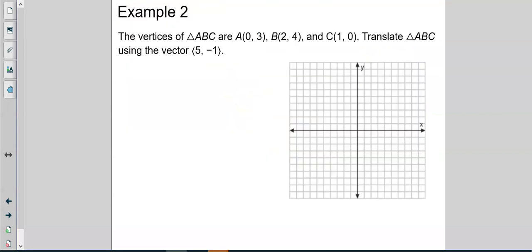The vertices of a triangle, A, B, C, are 0, 3. So 1, 2, 3. 2, 4. 1, 2. 1, 2, 3, 4. 1, 2, 3, 4. And 1, 0. So A, B, C. That's a horrible triangle, isn't it? That's okay.